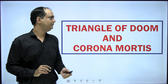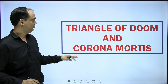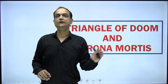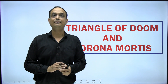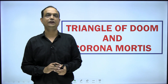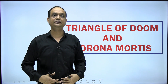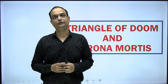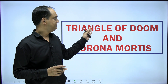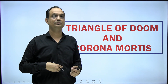Today we will discuss the triangle of doom and corona mortis. These two features are visible when talking about the laparoscopic anatomy of the anterior abdominal wall. You are not able to appreciate these features from the anterior surface — you have to pass the laparoscope inside the abdominal cavity and see it from the posterior aspect of the anterior abdominal wall.